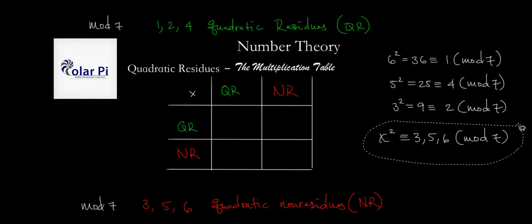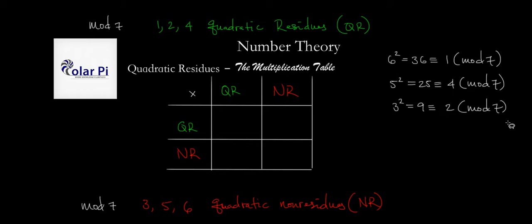So the point of this video is: what happens if we take a residue and a non-residue and multiply them? What happens if we take two non-residues and multiply them? And what happens if we take two residues and multiply them? Well, let's try it.